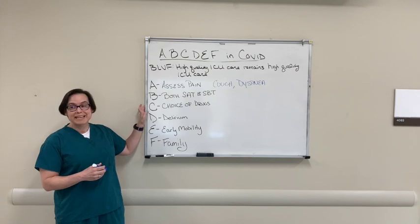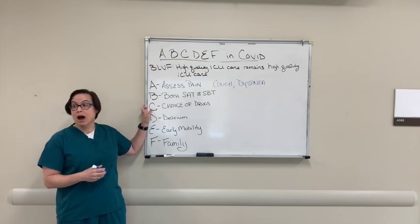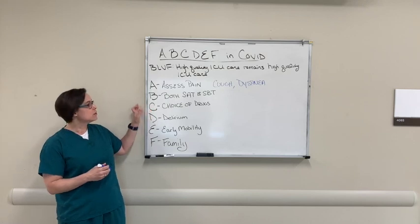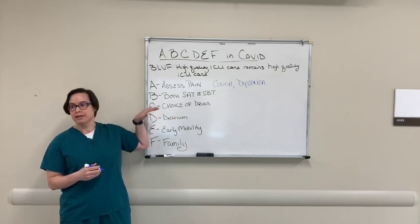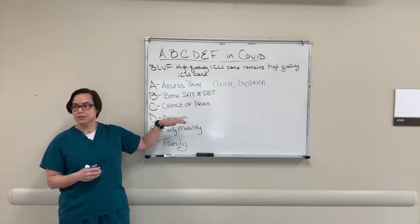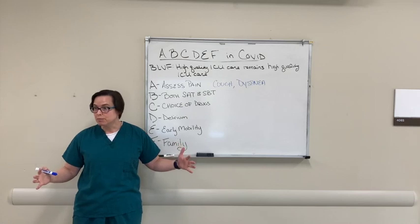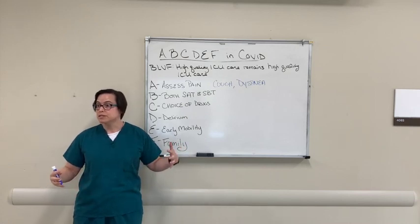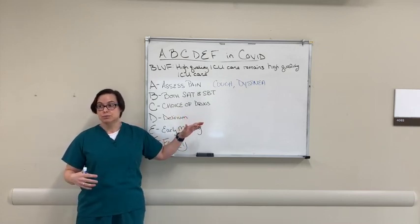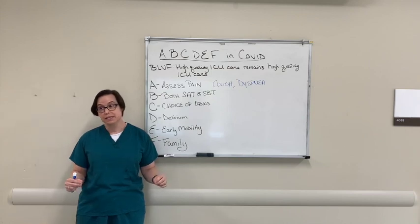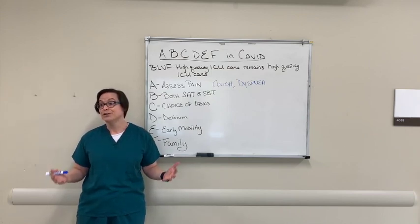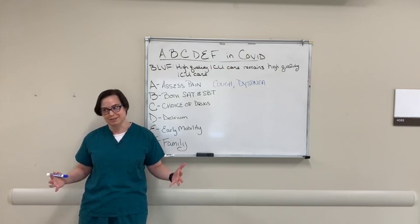When we get to C, this is where I really want to add things for COVID specifically. When we talk about choice of drugs in ABCDEF, we're talking about choice of drugs for pain, sedation, and delirium. That's super important — you want to think about your risk of delirium with any drugs you choose. But with COVID, you also have to check your hospital supply and can only use what your hospital has.